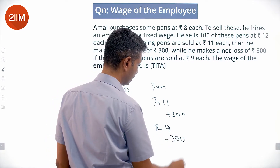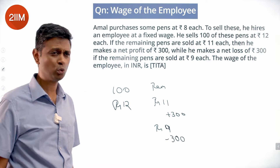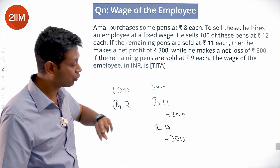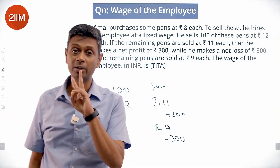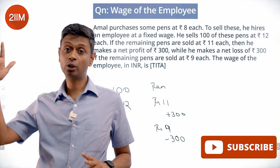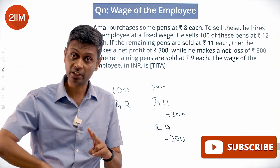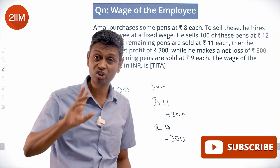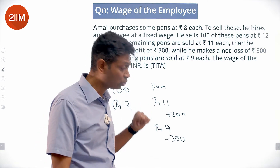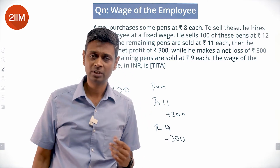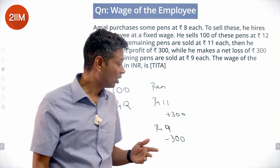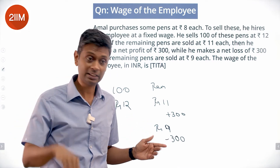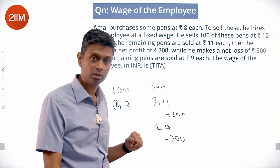If he sells at Rs. 9 he loses Rs. 300. Straight away, this is very useful — there's a swing of Rs. 2 per pen, and I go from Rs. 300 profit to Rs. 300 loss. The difference between the amount of money I make is Rs. 600, at Rs. 2 per pen. Instead of selling at Rs. 11, I sell at Rs. 9, making Rs. 2 per pen lesser.